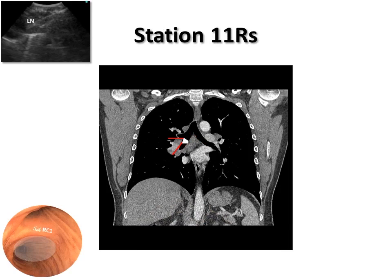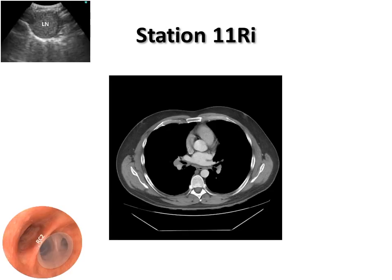The scope is positioned at the level of RC1 just below the right upper lobe bronchus. Station 11R is located between the right middle lobe and the right lower lobe bronchi. The eBus scope is positioned in the proximal right lower lobe bronchus with the transducer oriented toward the right lateral wall.